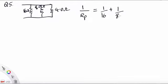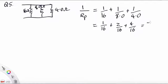So 1 over 16 plus 1 over 8 plus 1 over 4. Now I'm going to put them all over 16. So we have 1 over 16 plus 2 over 16 plus 4 over 16 gives us 7 over 16. So that means that RP itself is 16 over 7, and that is, to two significant figures, 2.3 ohms.